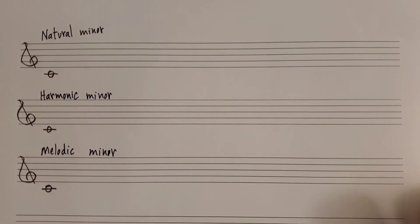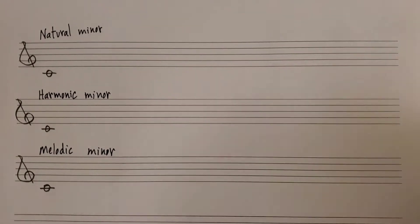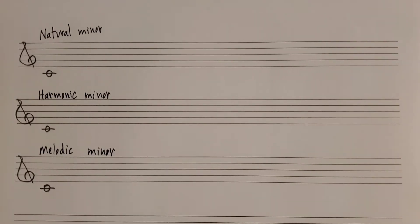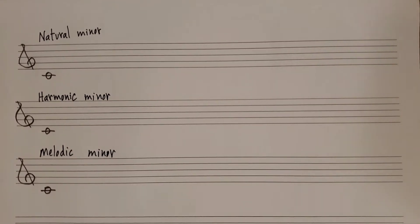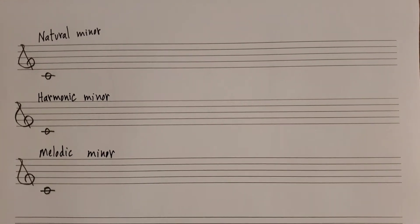In this video we're going to take a look at the spelling of a few different minor scales. First we'll spell natural minor, then harmonic minor, and then melodic minor. Natural minor and harmonic minor scales are typically spelled ascending only, as they are the same going up and down. But the melodic minor scale is typically spelled ascending and descending because it is different on the way up and on the way down.